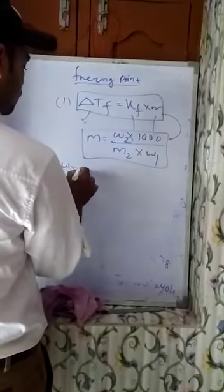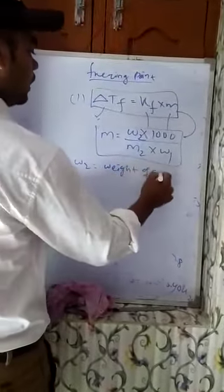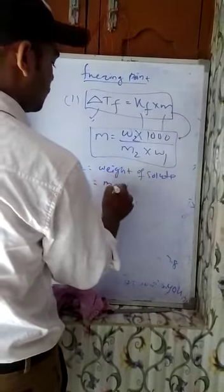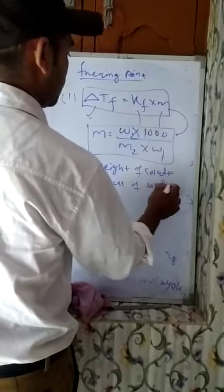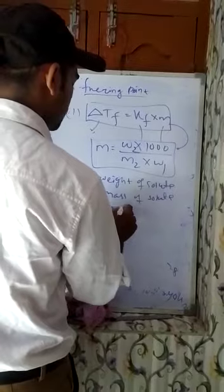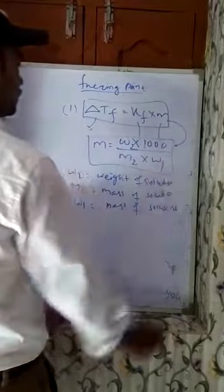What is W2? W2 is the weight of the solute. And M2 is the mass of the solute. And W1 is the mass of the solvent. That will be given in the question.